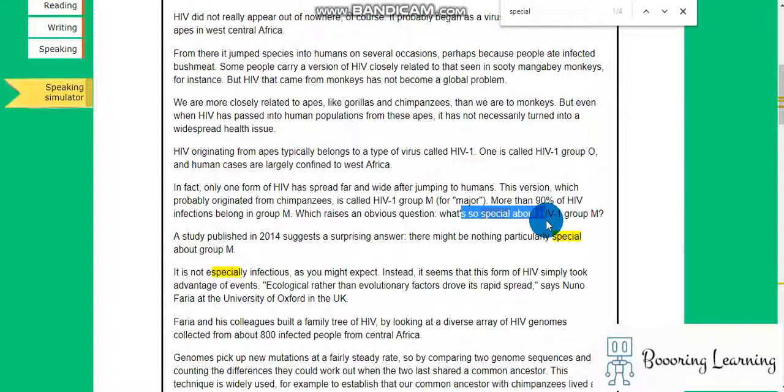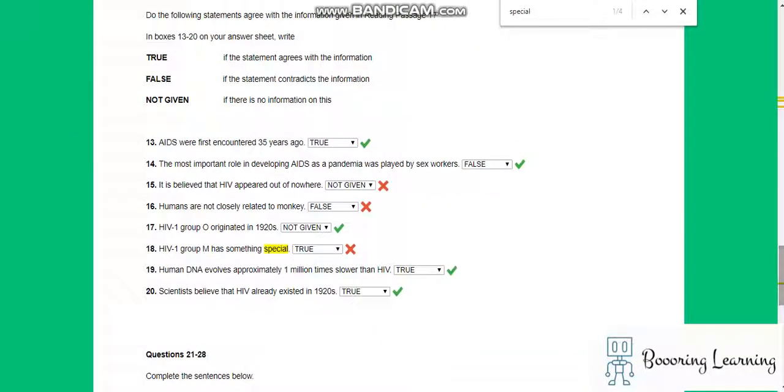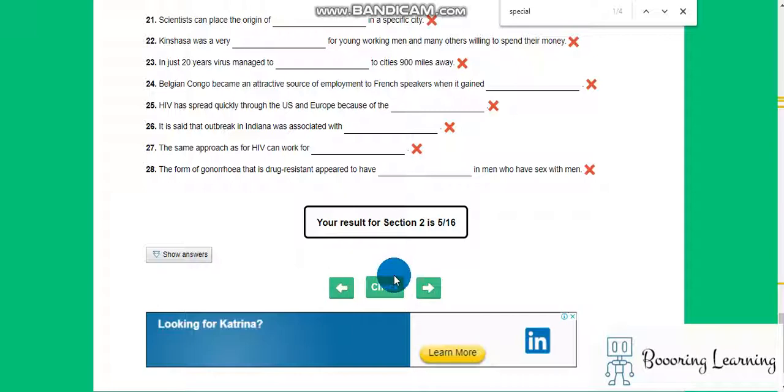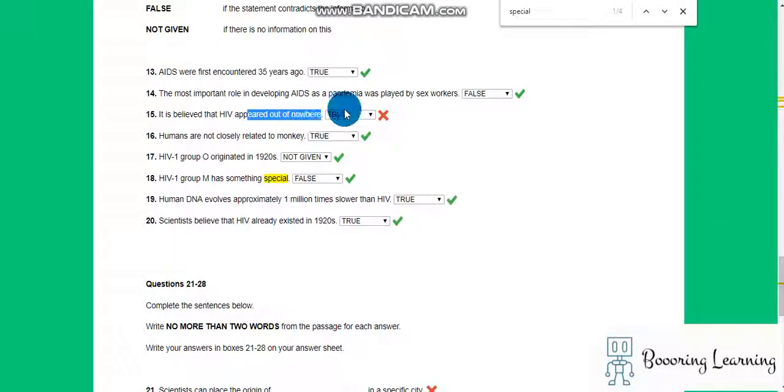What's so special about HIV first group M? So there might be nothing particularly special. We should read all of that. False. Humans are not closely related to monkeys. Let's say true. It is believed that HIV appeared out of nowhere. True. False.